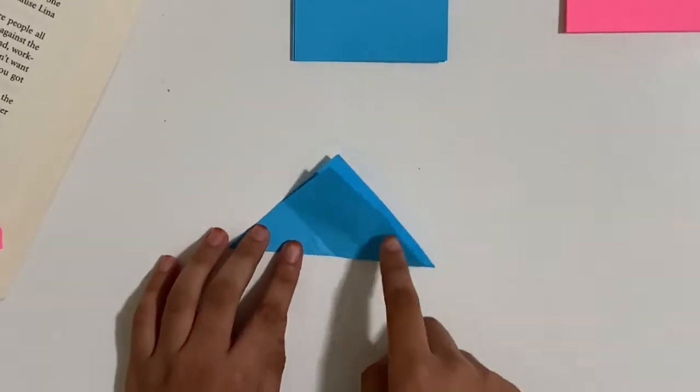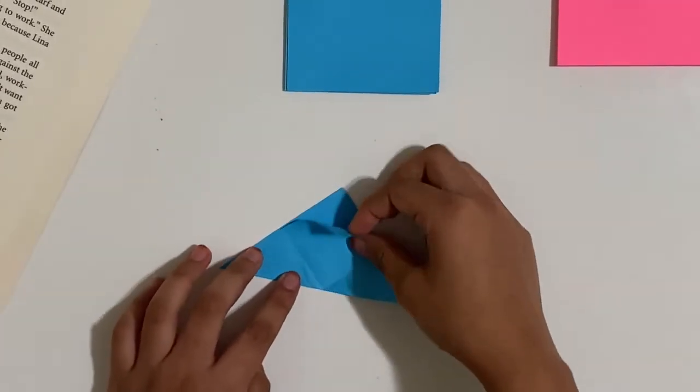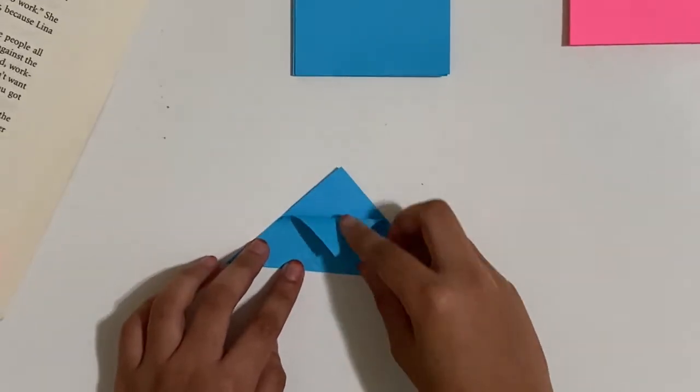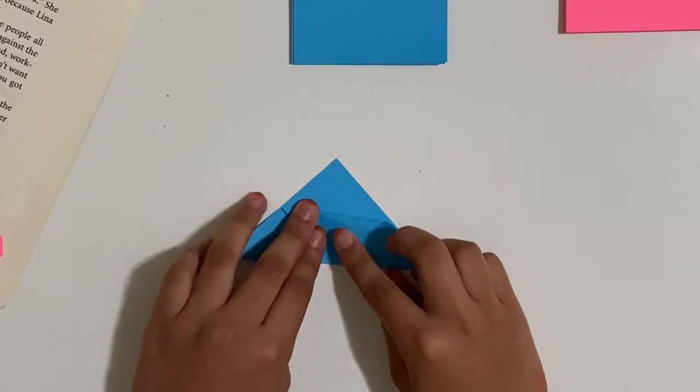So there's this crease here and we're just going to pull one flap down from the top and point it to the bottom edge.